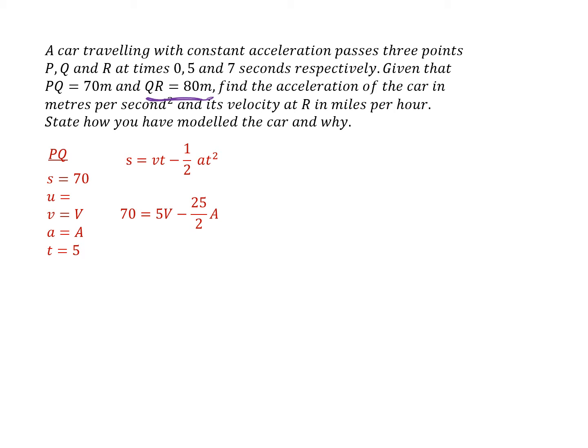The nice thing about this is that the final velocity on the PQ leg is going to be the same as the initial velocity on the QR leg. So the initial velocity here is V. The acceleration on the second leg is the same as on the first leg. So I've now got to find the formula that doesn't have the V in it, and that is this one.